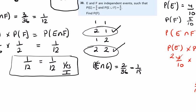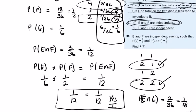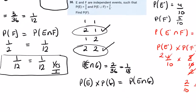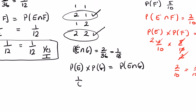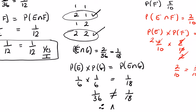Checking E and G independence: P(E) × P(G) = (1/6) × (1/6) = 1/36. Is that equal to P(E ∩ G) = 1/18? No — 1/36 ≠ 1/18. Therefore E and G are not independent.